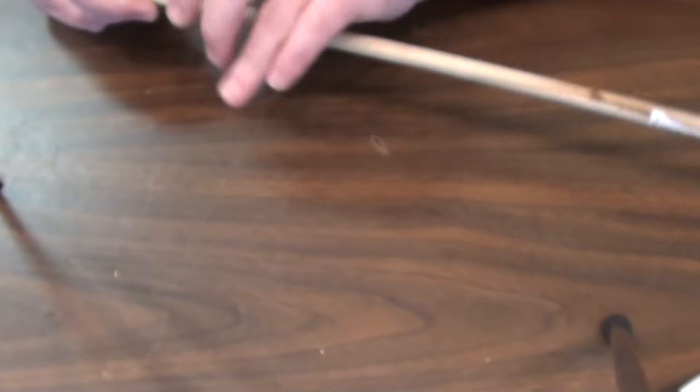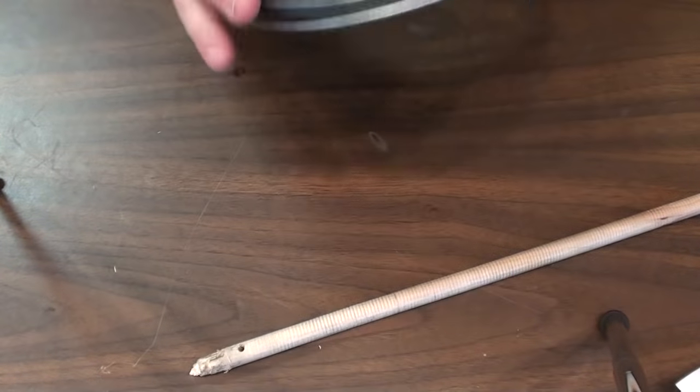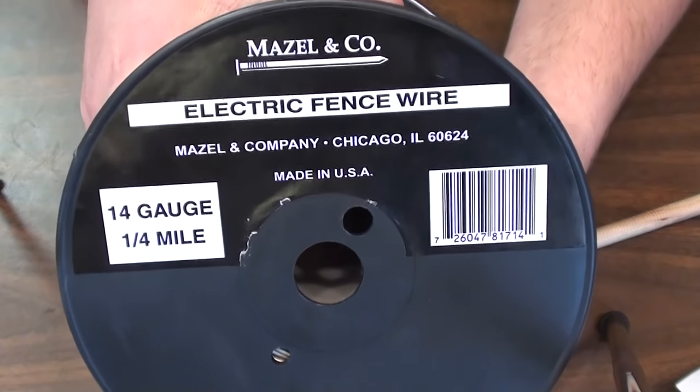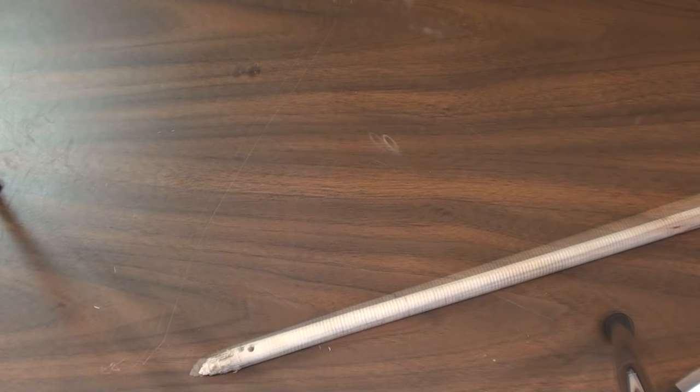You drill a hole in one end to put your wire through. I'm using 14 gauge galvanized electric fence wire. You get a quarter mile for about 25 bucks.